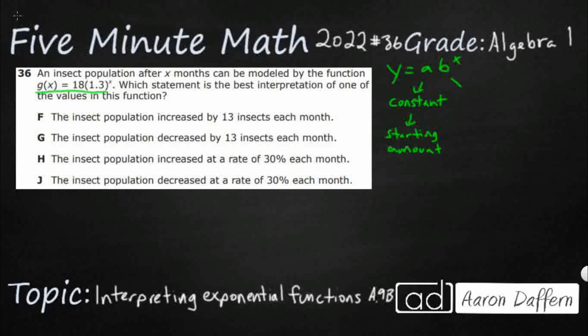So this b in these situations is typically going to be your rate. You're going to multiply the constant by the rate of change. Now here's the interesting thing. Let's say if you had a rate of, let's say it increases by 50% every month or every year.